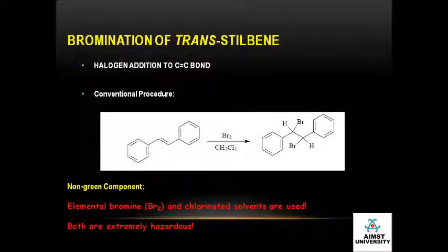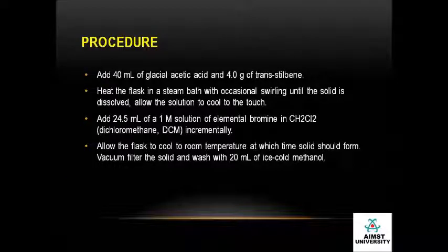Coming to the conventional technique of bromination of trans-stilbene: the reaction is nothing but halogenation of a carbon-carbon double bond. The non-green components of this technique are elemental bromine and chlorinated solvents, because both are extremely hazardous. This is a halogenation reaction.